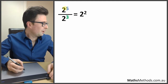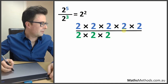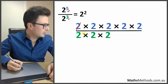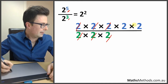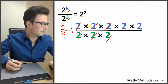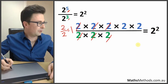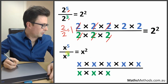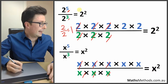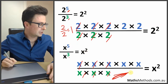When dividing, 2 to the power of 5 divided by 2 to the power of 3 equals 2 to the power of 2. We've got 5 twos on top and 3 twos on the bottom. We cancel them — because 2 divided by 2 equals 1 — leaving 2 to the power of 2. The same works with x's: 5 x's on top, 3 on the bottom, cancel them, giving x to the power of 2. The trick is just 5 minus 3 equals 2.